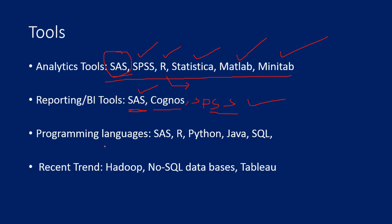The popular programming languages that are very useful and used most of the time are again led by SAS, and then R. Python is getting popularity, Java is also becoming very popular — especially after big data. And then SQL is a must.